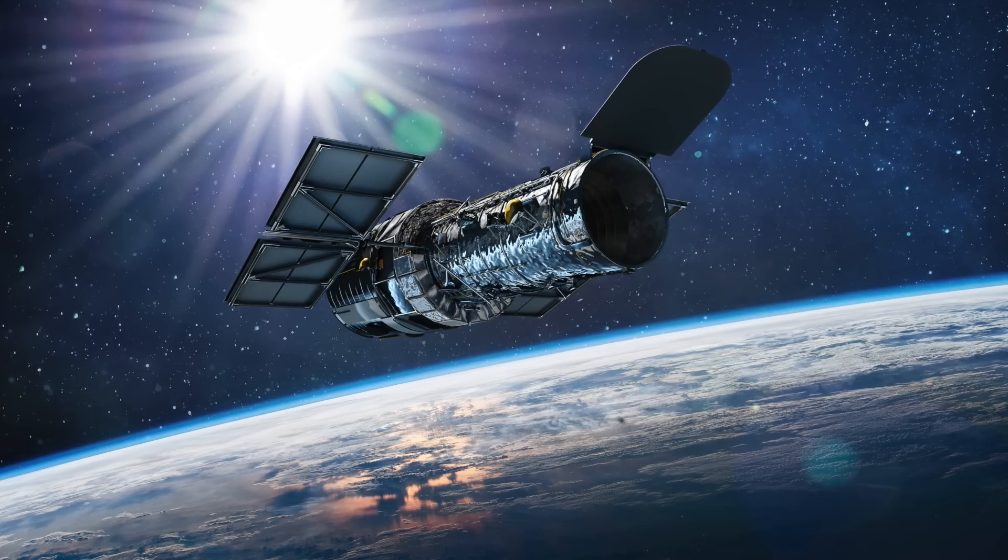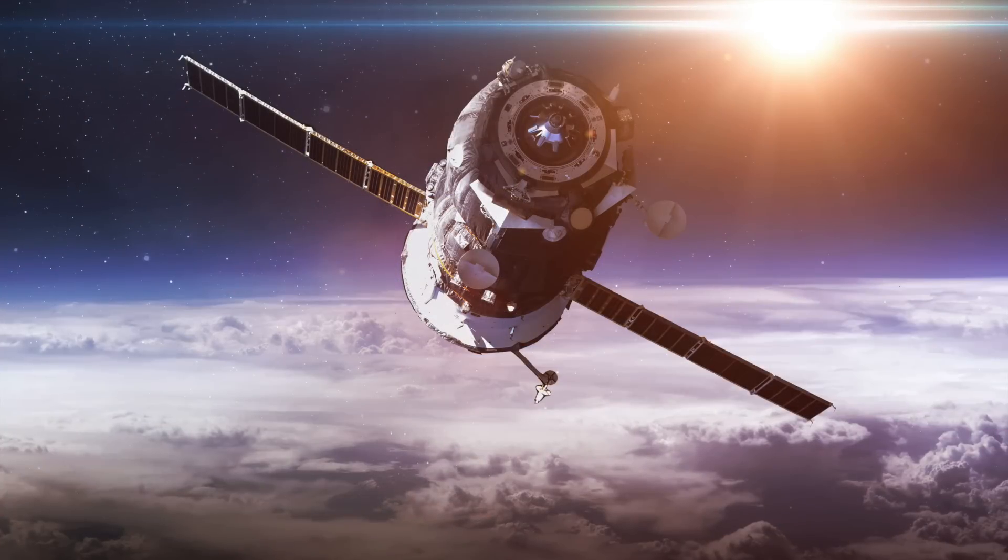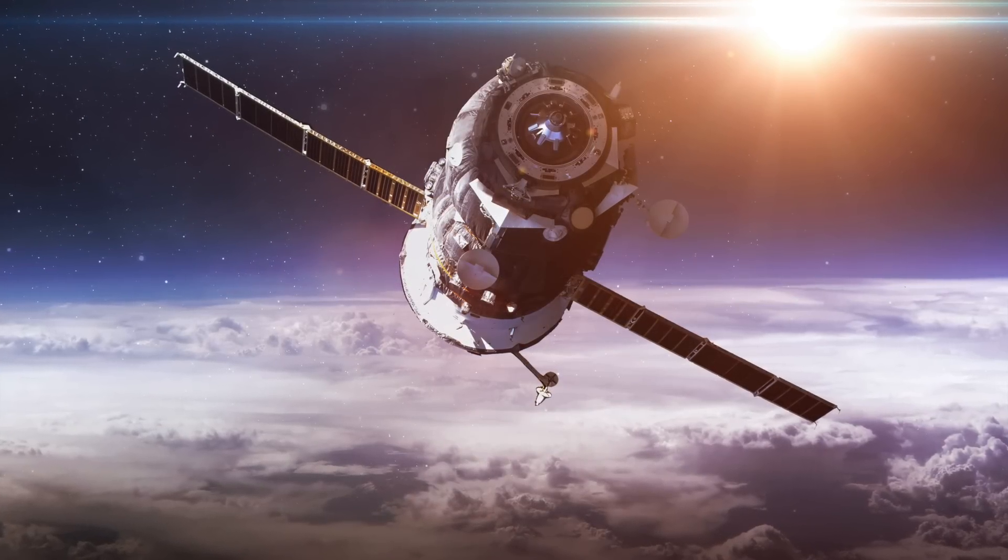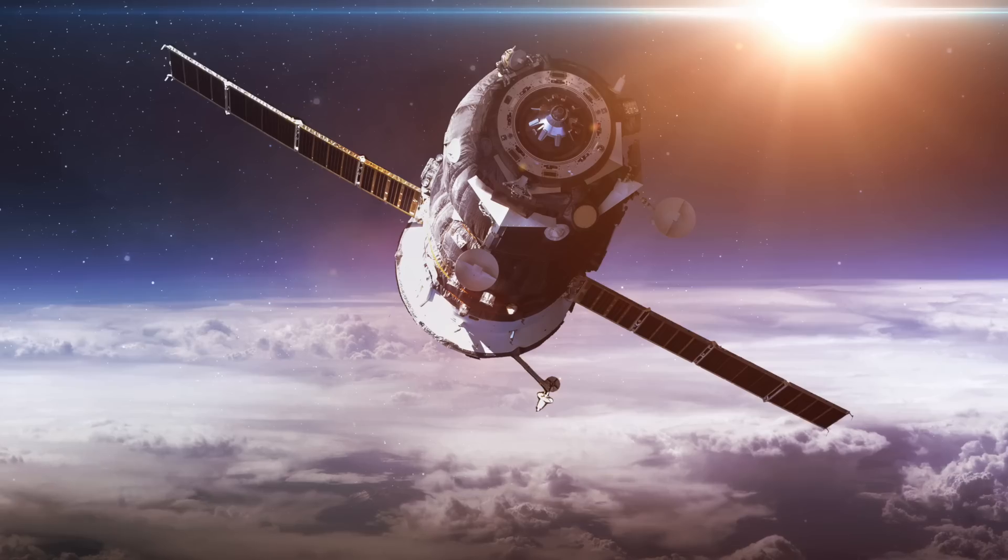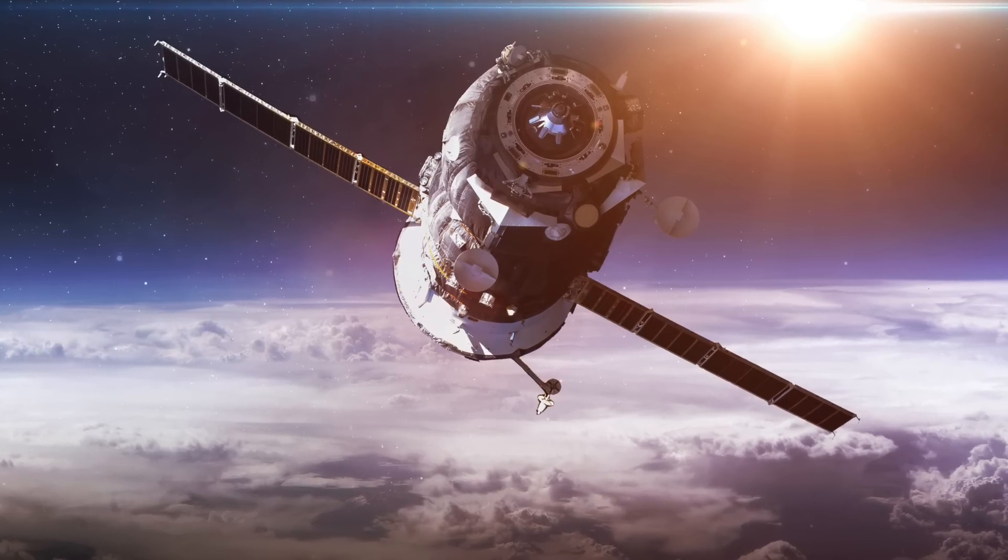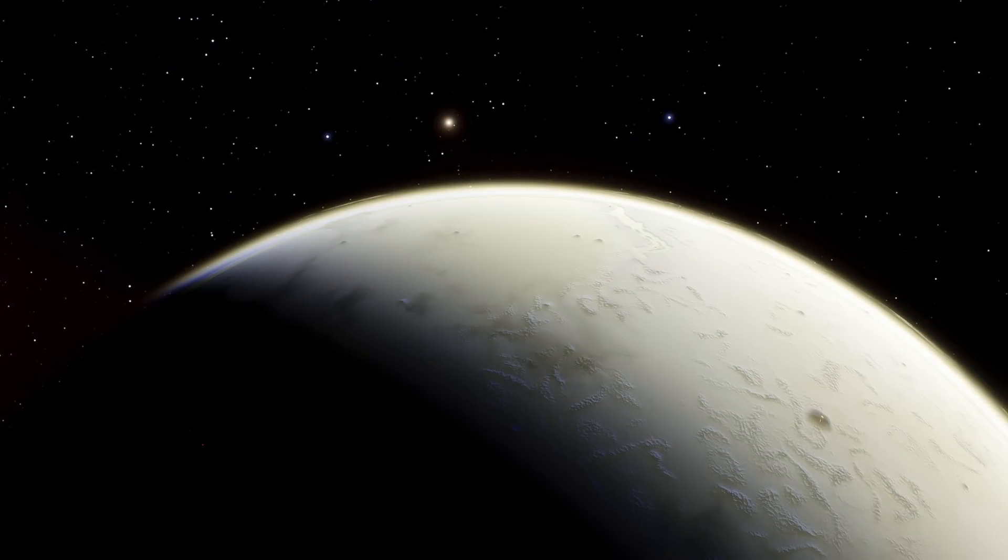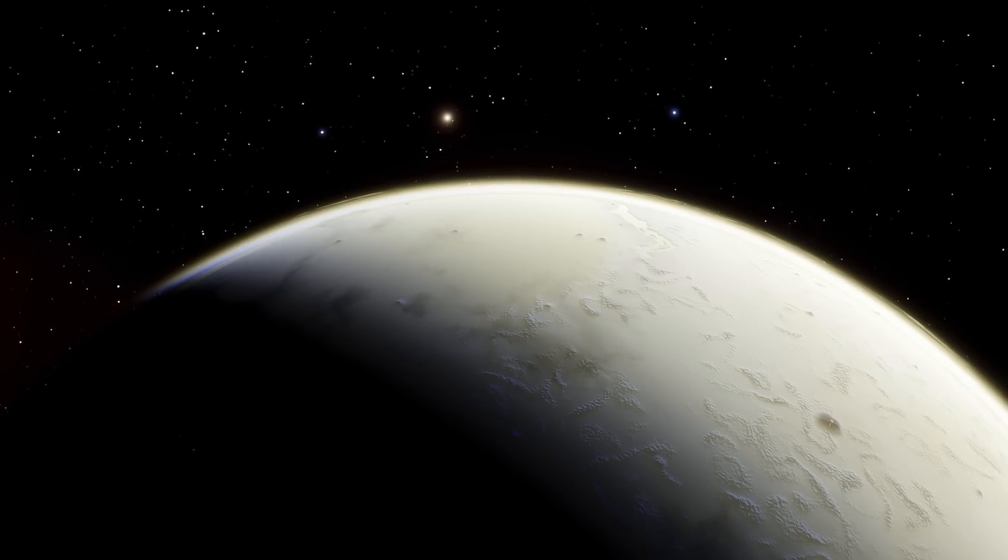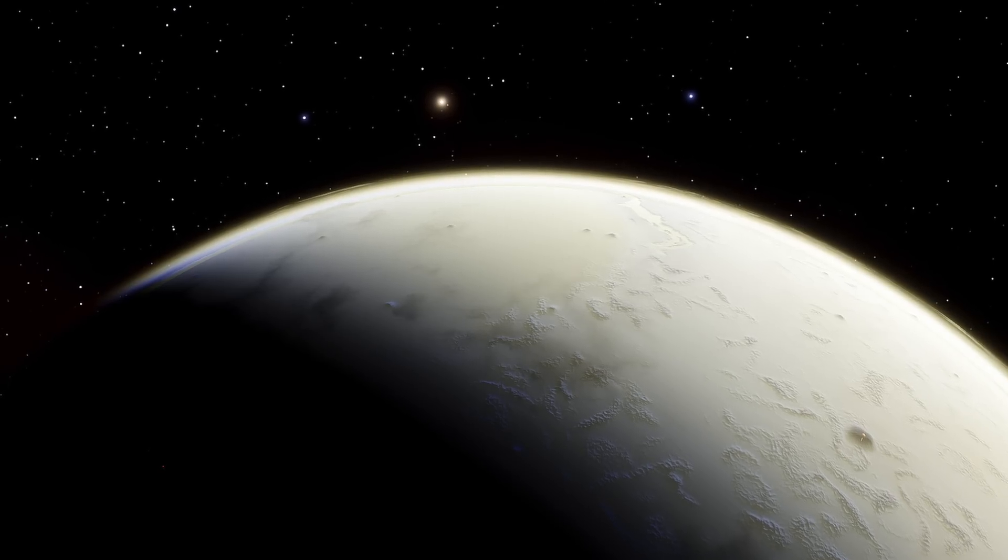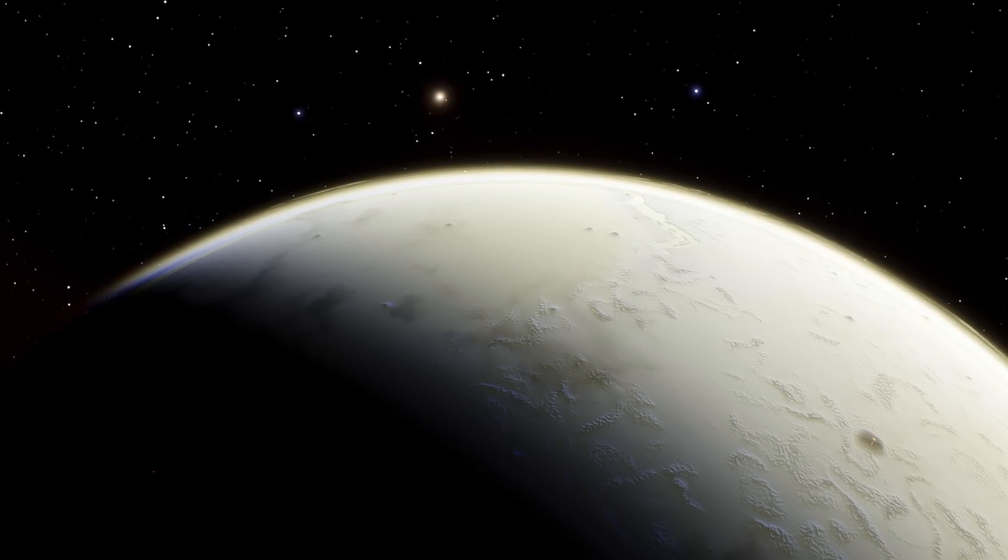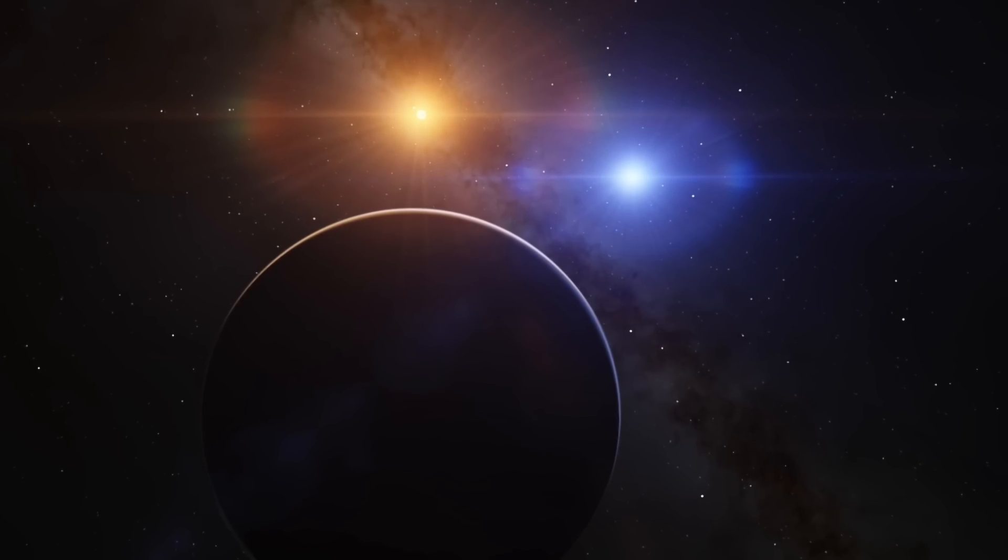Exoplanets can be discovered by observing small temporary decreases in the brightness of stars, which could be caused by an exoplanet orbiting in front of the star blocking its light. However, not all of these decreases in brightness are due to exoplanets and it is often incredibly difficult to sort out the false positives from the actual exoplanets when observing the data and locating the site of a potential exoplanet.